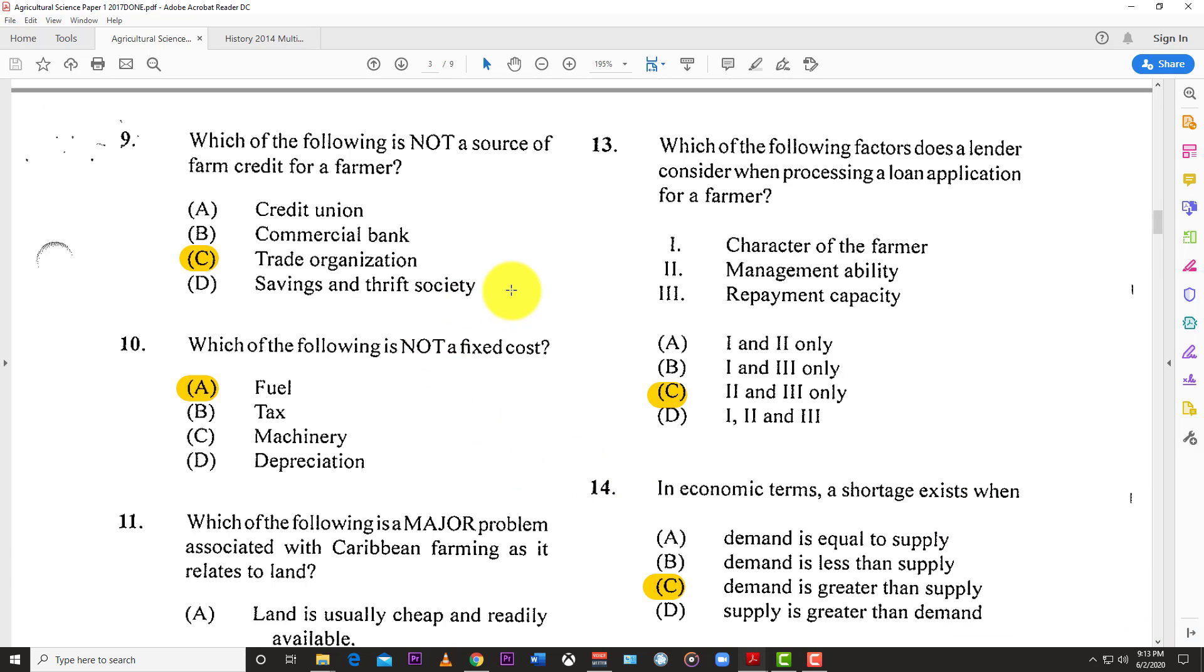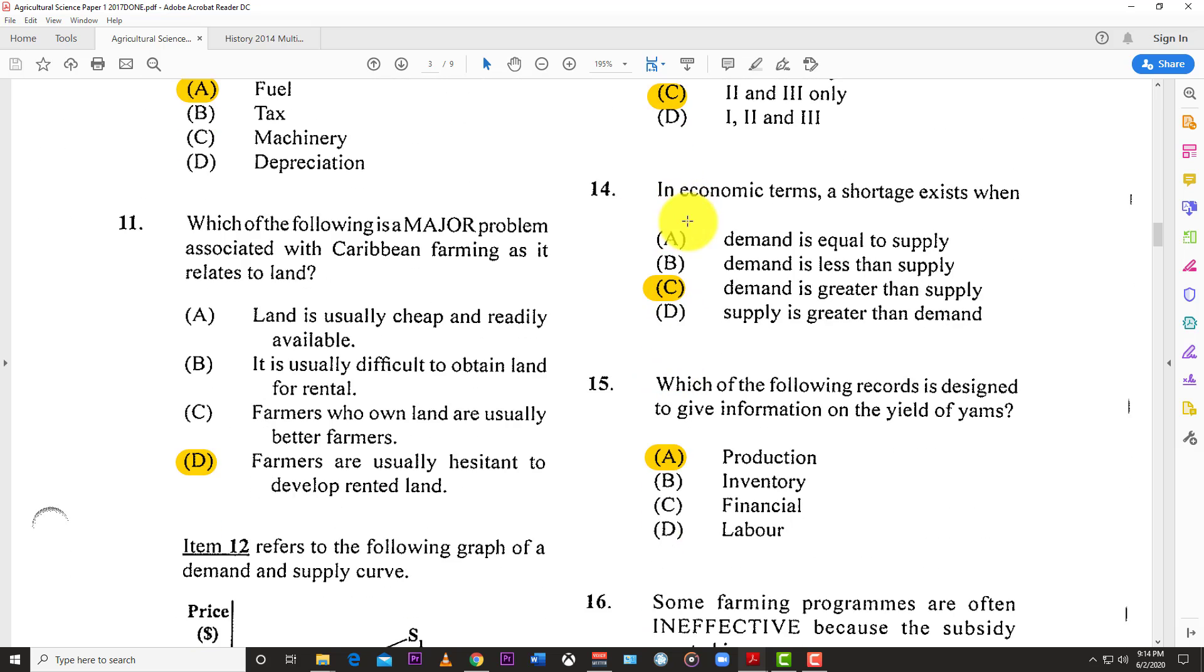Number thirteen: Which of the following factors does a lender consider when processing a loan application for farmers? You have character of the farmer, management ability, and repayment capacity. The answer is C, two and three. You want to know if the farmer has a past of running a business at a loss or profit and whether they can repay the loan. But character doesn't really come into play. Once money talks, they give you the loan whether you're rude or not.